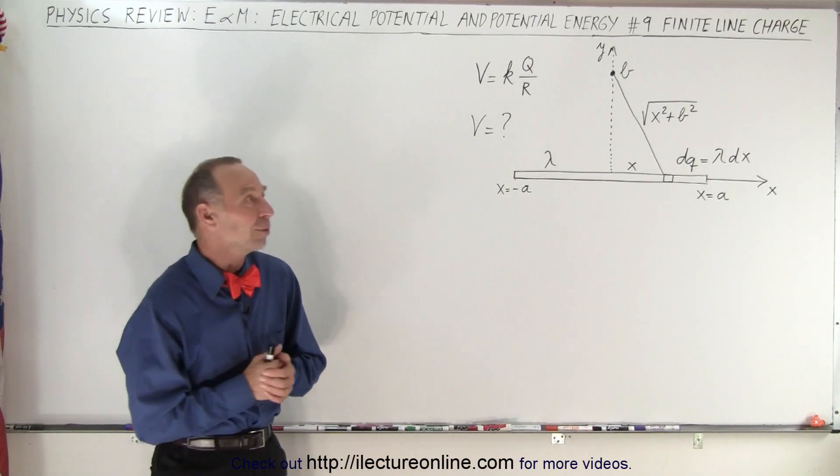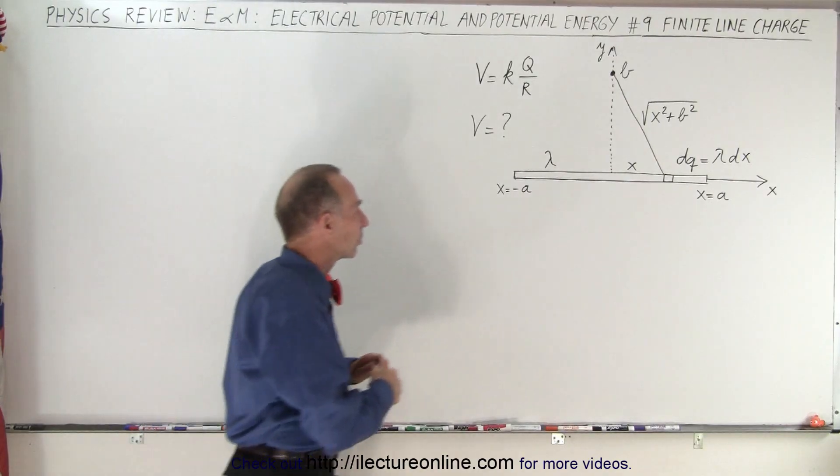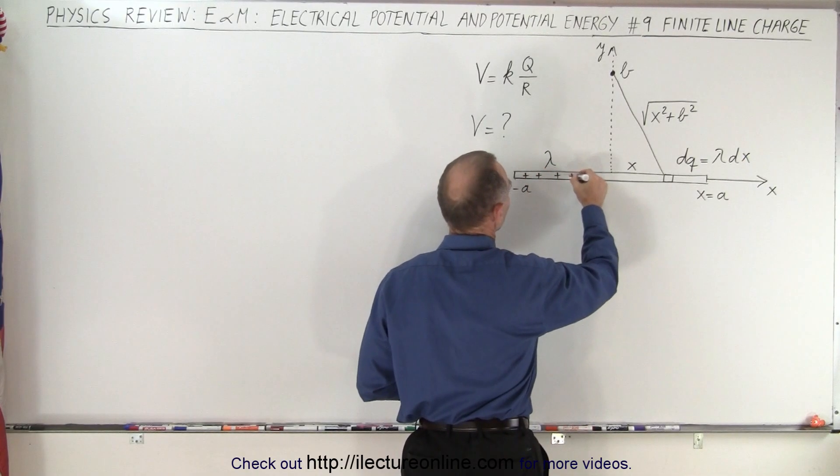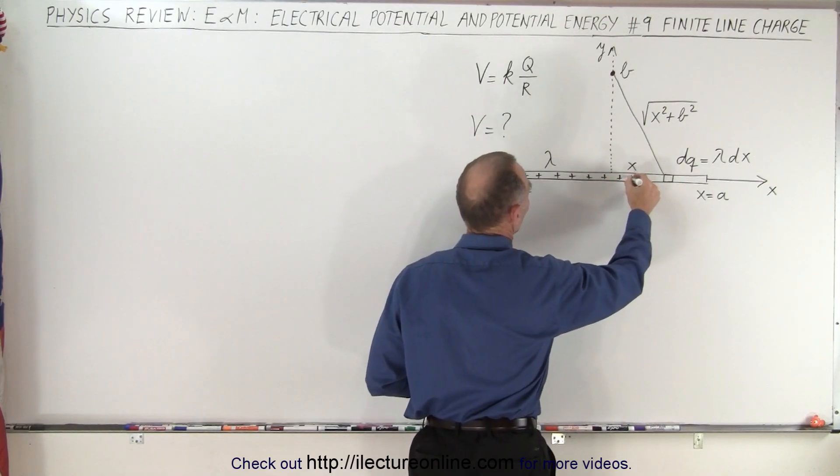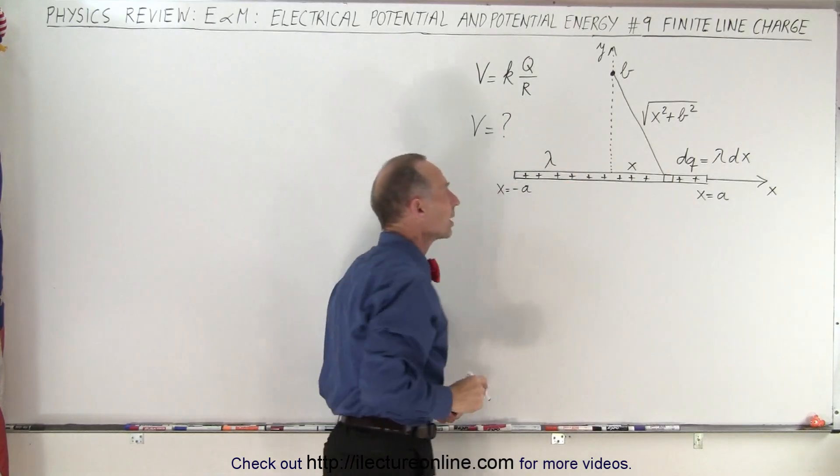Welcome to Electron Line. Now let's take a look at a finite line charge segment. So let's say that this has positive charge on it and the charge per unit length is denoted by lambda right here.